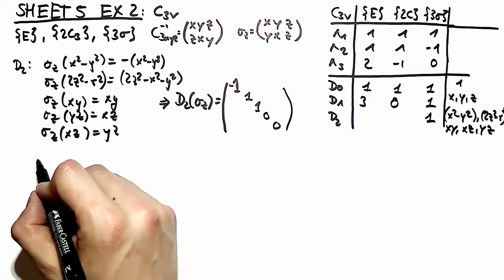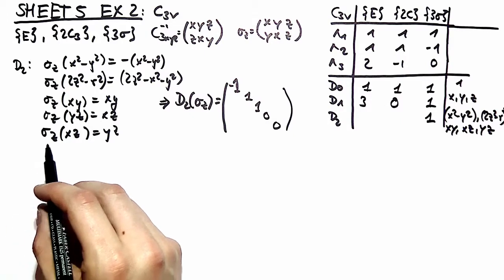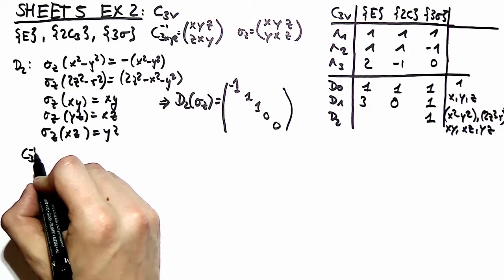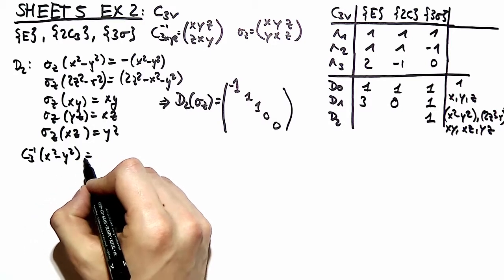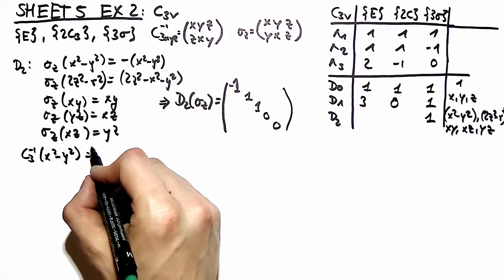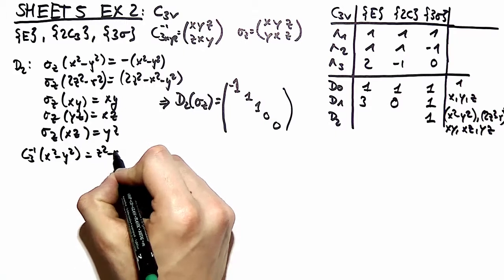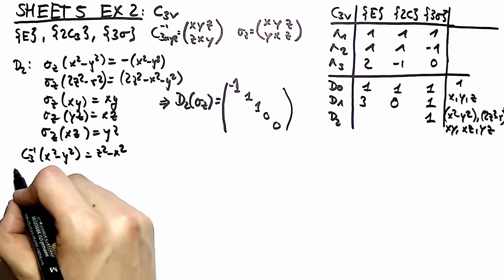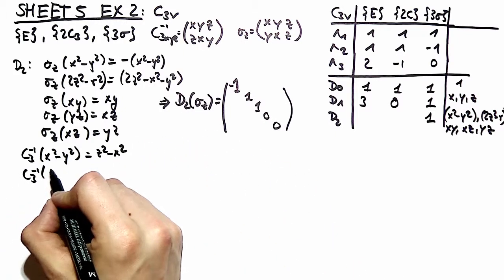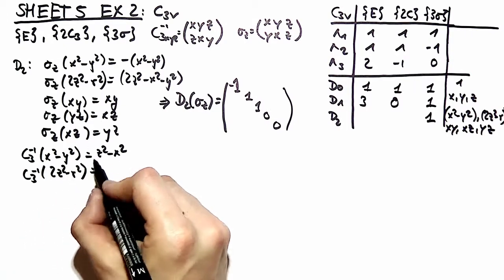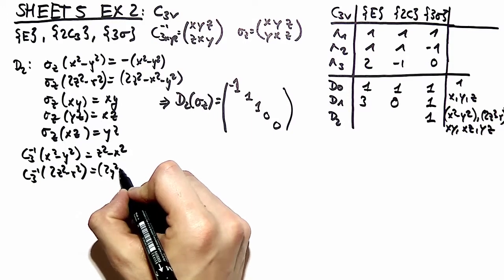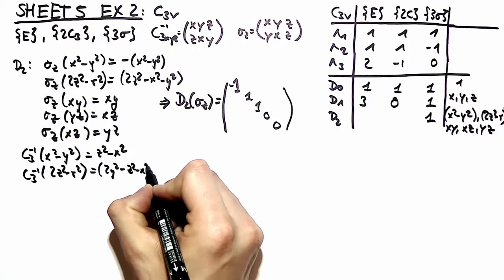Let's move on. Let's look at how the C3 to the minus 1 transforms x squared minus y squared. We look into the details and recognize this is z squared minus x squared. C3 to the minus 1 of 2z squared minus r squared ends up being 2y squared minus z squared minus x squared.